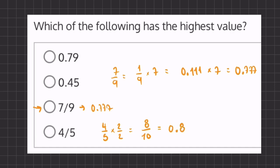So now we can compare all of our values in decimal form. And we can tell that 0.8, 4 over 5, will be our highest value.